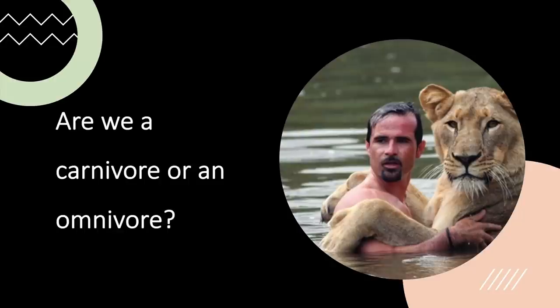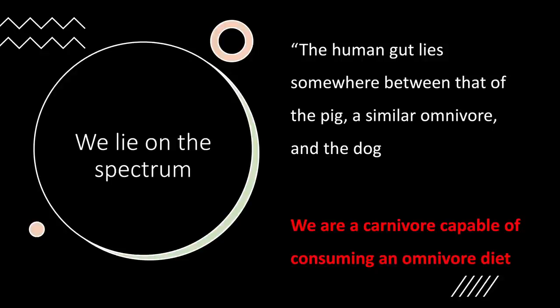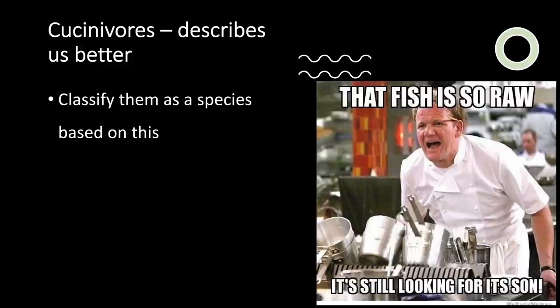Are we a carnivore or an omnivore? We are basically between a pig, which is an omnivore, and a dog — a carnivorous species capable of consuming an omnivore diet, very flexible. The best way to describe us is probably as cochinivores, a term coined by many evolutionary biologists, classifying us as a species based on the fact that we cook our food to extract nutrients.